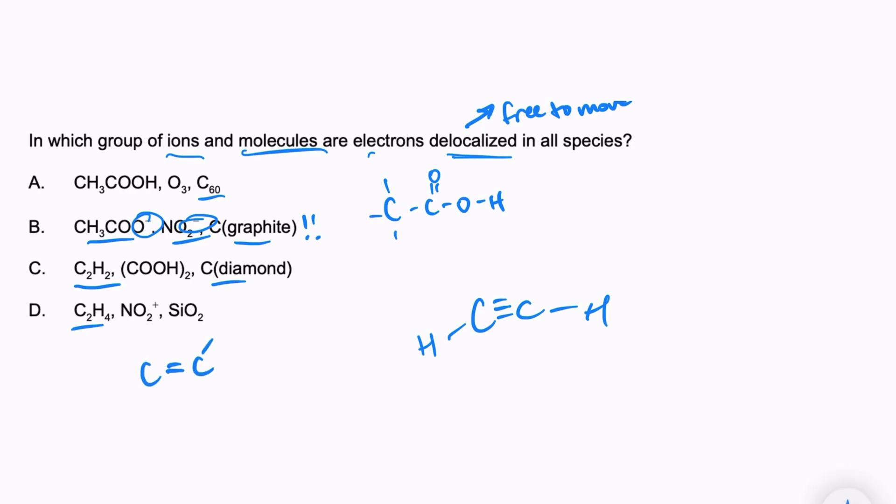Both of these we already know have delocalized electrons because there is a negative sign, so there's some movement of electrons there. Let's look at C2H2, which would look something like this. Again, both carbons and hydrogens are following the octet rule - that means all of our atoms are stable. There's no free-moving electrons at all.